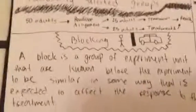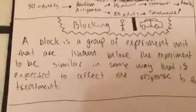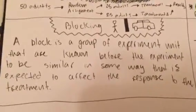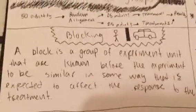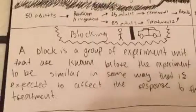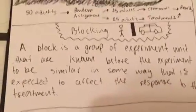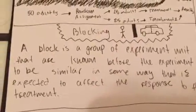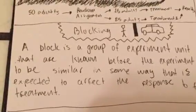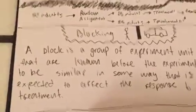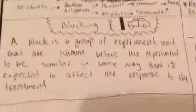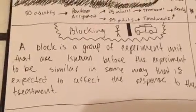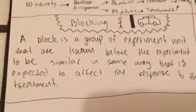Then we have block design. A block is a group of experimental units that are known before the experiment to be similar in some ways that are expected to affect the response to the treatment. For example, you're doing an experiment and you know the units are similar, but you don't know how they affect each other. You get a result and then respond to that treatment and conduct the rest of your experiment throughout your results.